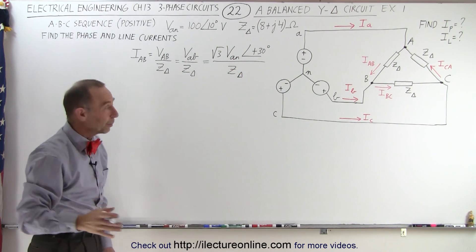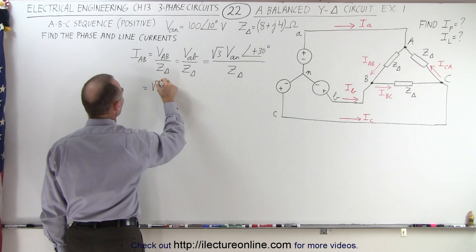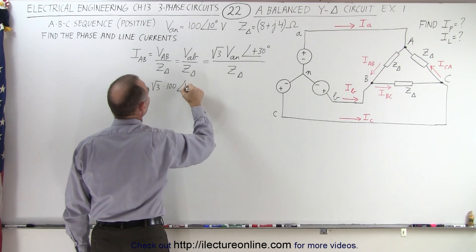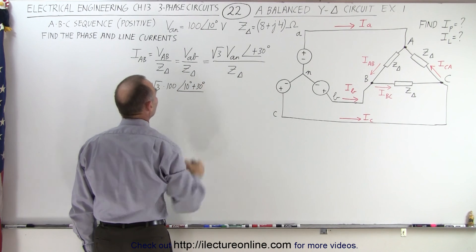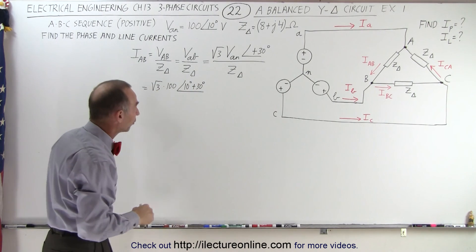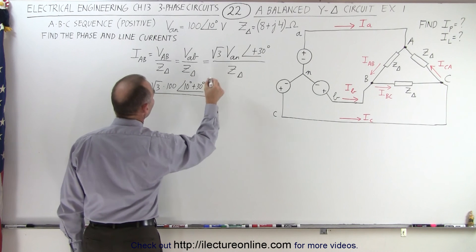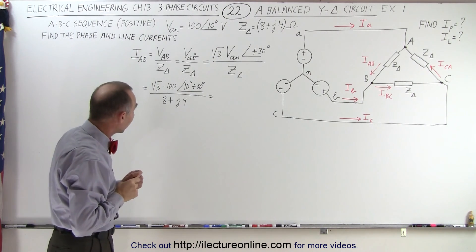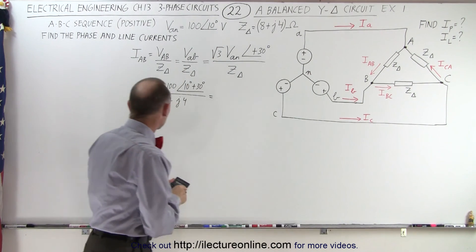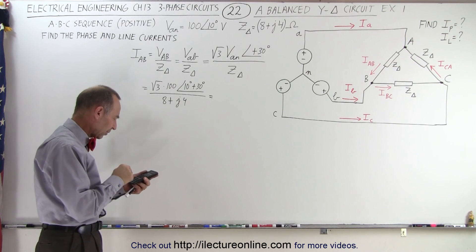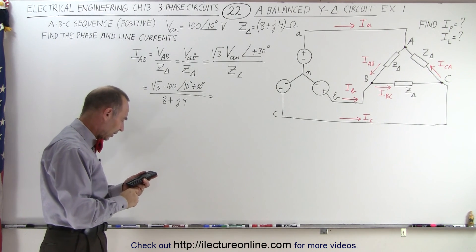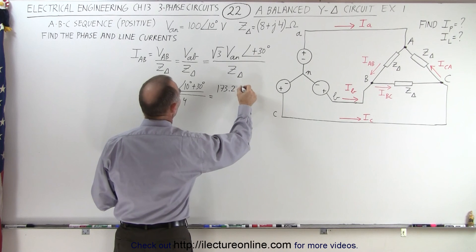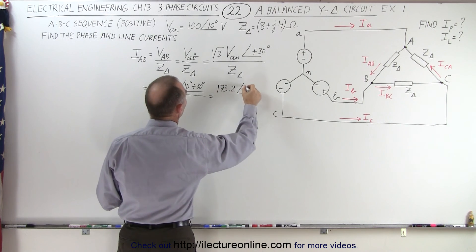Now we're ready to plug in the numbers. This equals the square root of 3 times 100 with a phase angle of 10 degrees, plus the 30 degree phase difference between the phase and the line voltage, divided by 8 plus j4. For the numerator, the square root of 3 times 100 gives us 173.2 volts with a phase angle of 40 degrees.